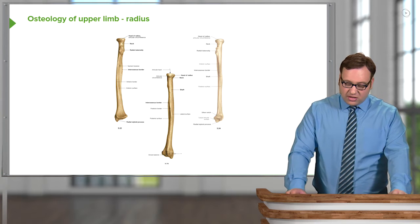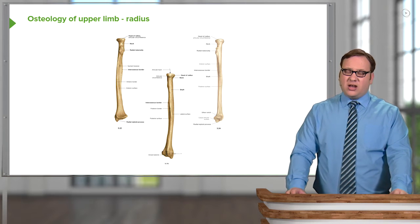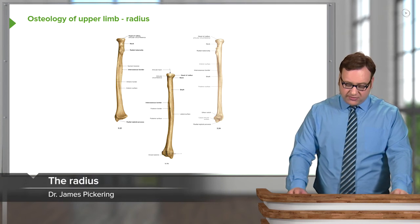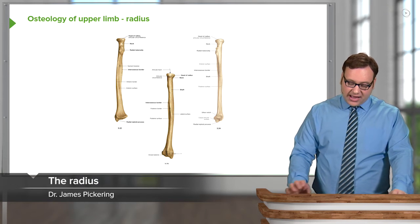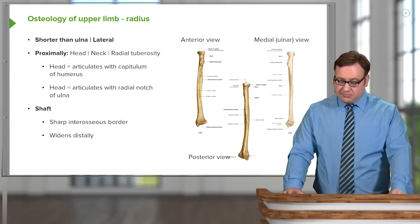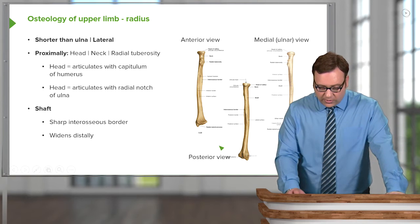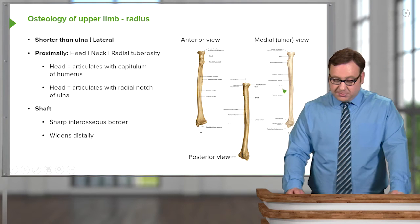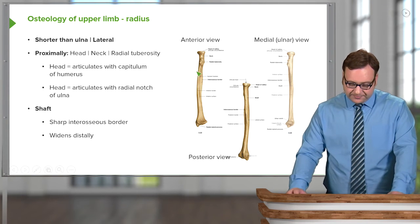Now let's look at the radius. This is a bone that lies on the lateral aspect of the forearm. We've got anterior, posterior, and a medial or ulnar view, which we can see in this picture here on the slide.